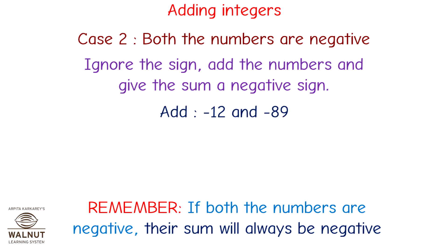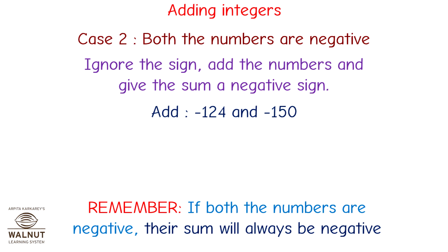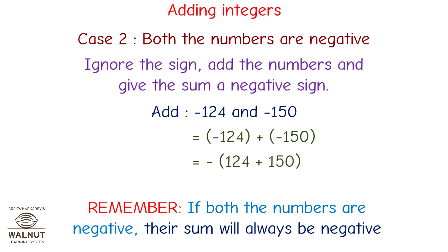Minus 12 and minus 89: we add 12 plus 89 to get minus 97. Minus 129 and minus 45 is equal to minus 174. Minus 129 and minus 150 is equal to minus 279.